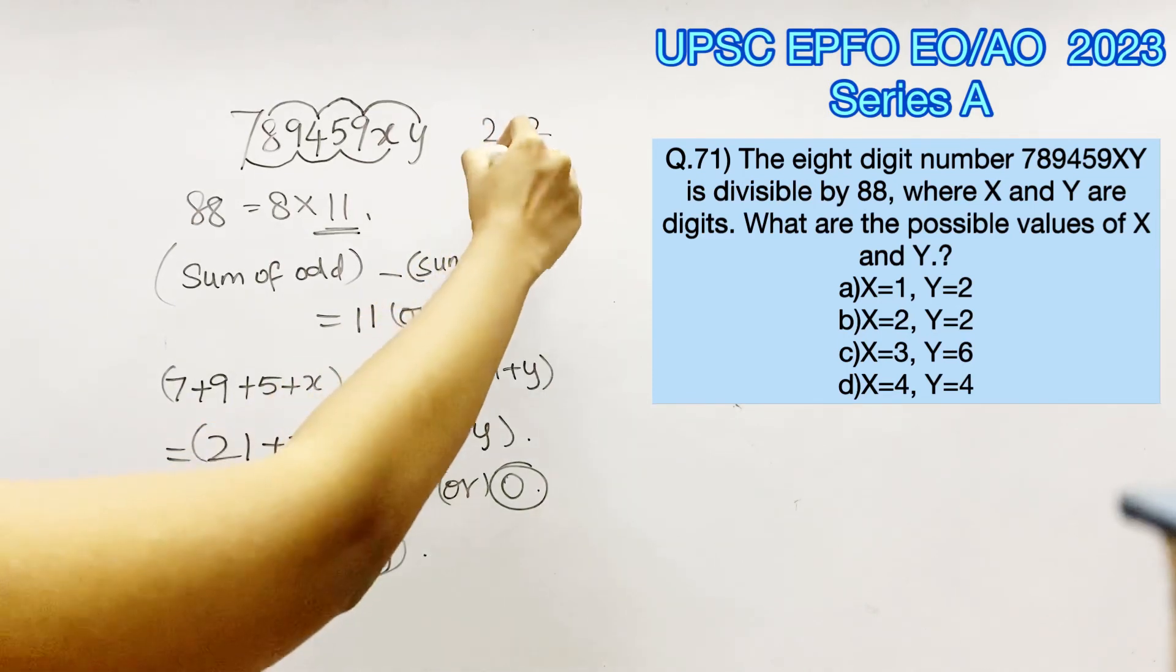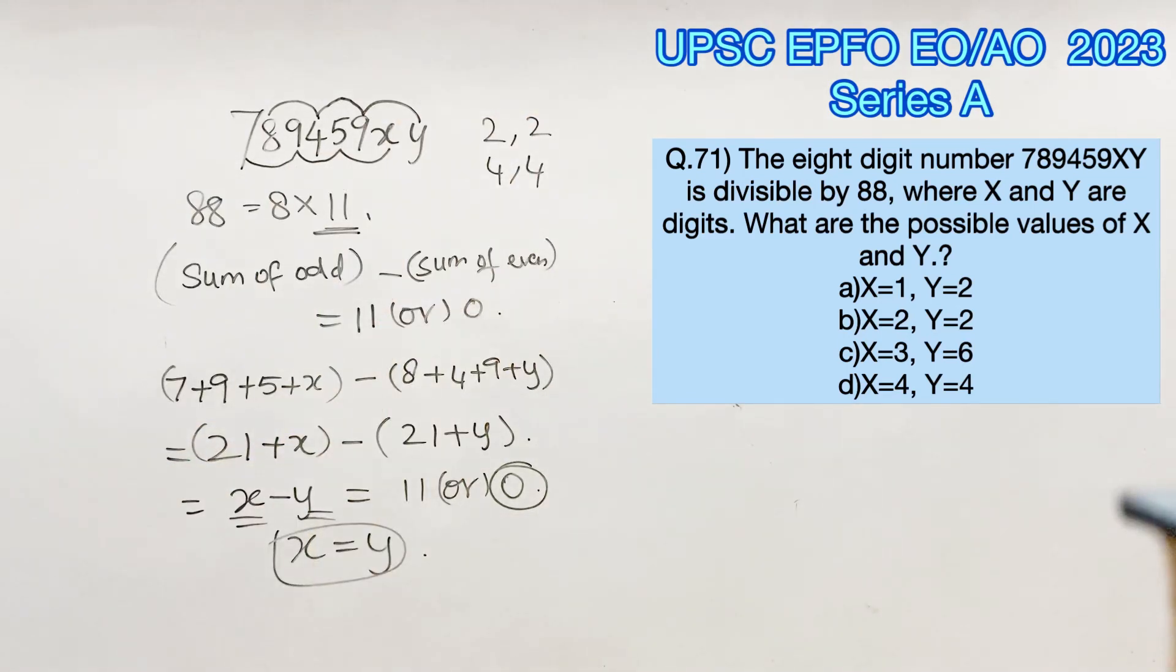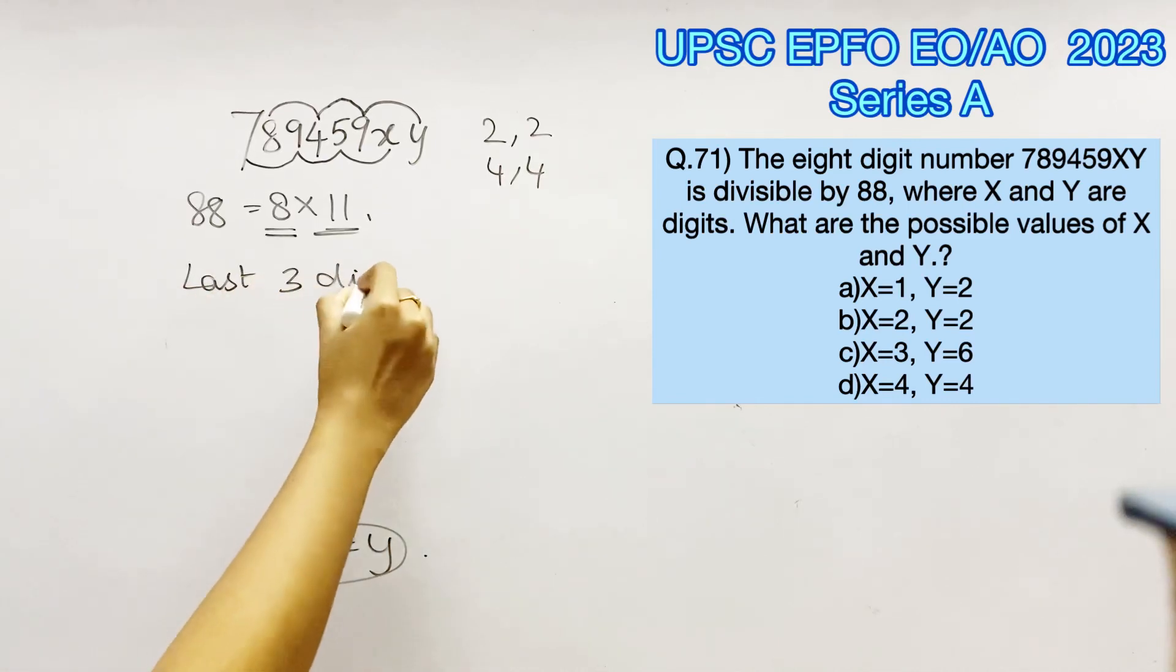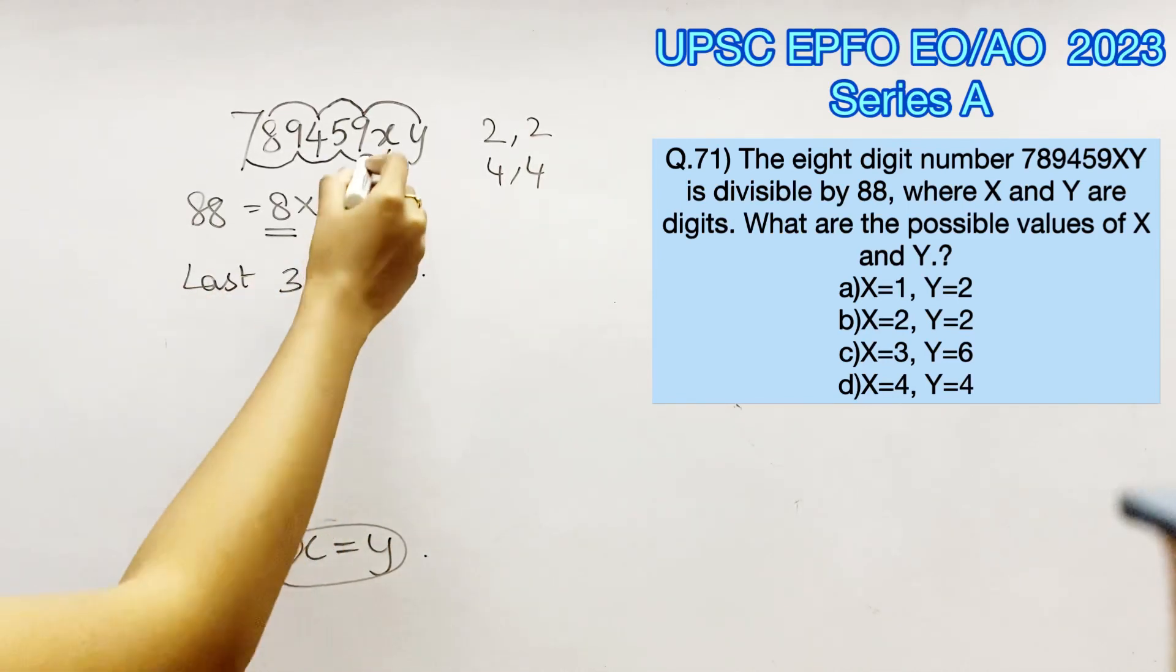So there are two options, option B and D, where x and y are equal. Now the divisibility rule of 8 is that the last three digits of a number should be divisible by 8.